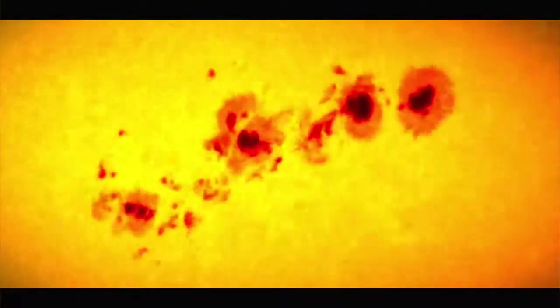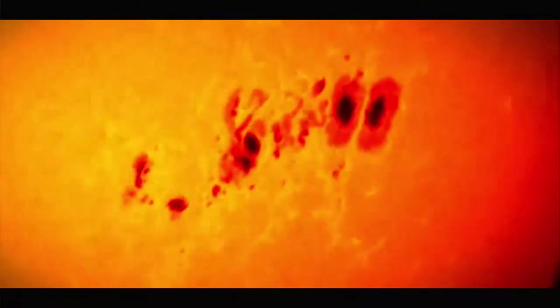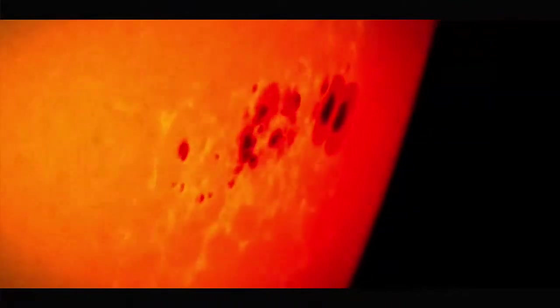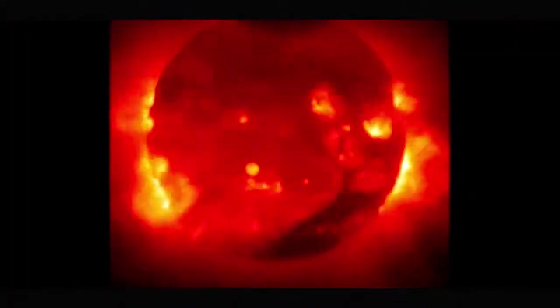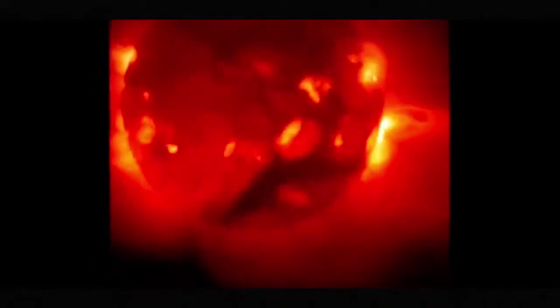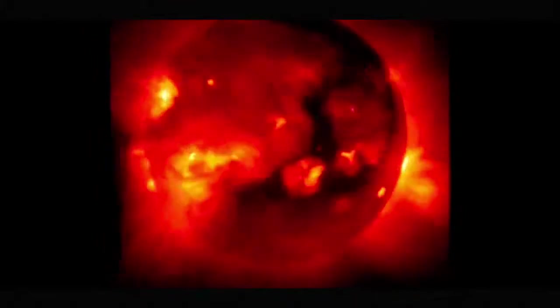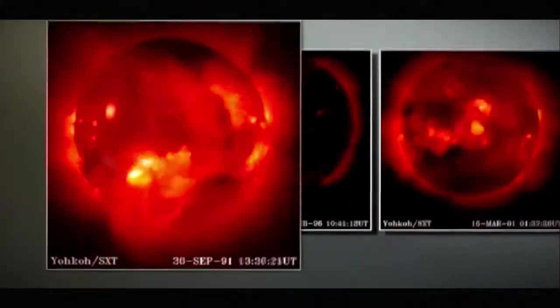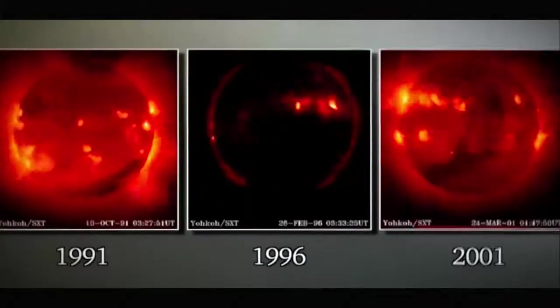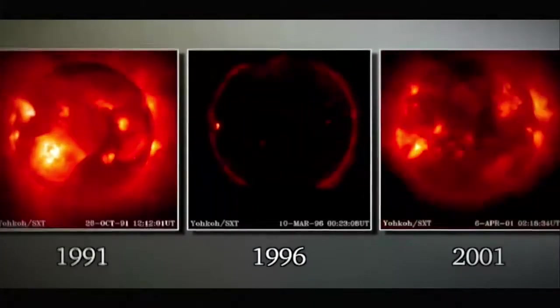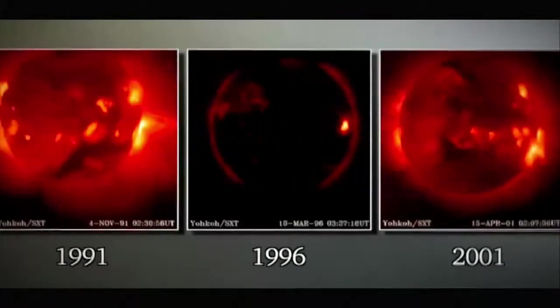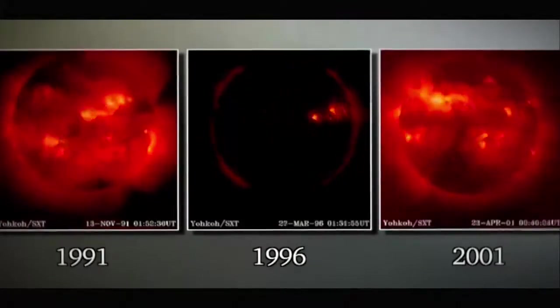Sunspots do not necessarily stay in the same place. They can appear and disappear and are constantly changing. This footage shows the surface of the sun captured repeatedly over a period of more than 10 years. The lighter, glowing patches are the sunspots. When observed over several years, it becomes evident that the number of sunspots varies with time. This is proof that the sun's activity changes in intensity.